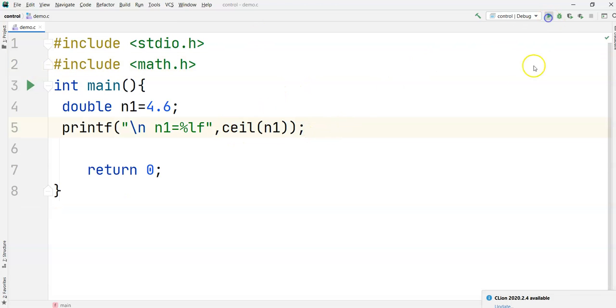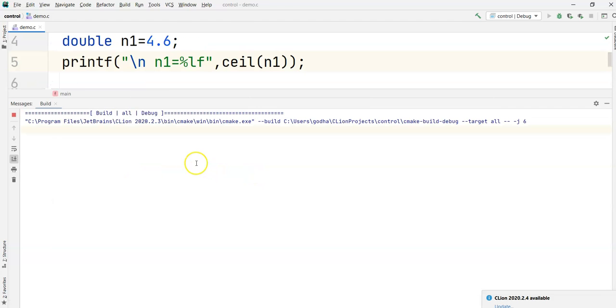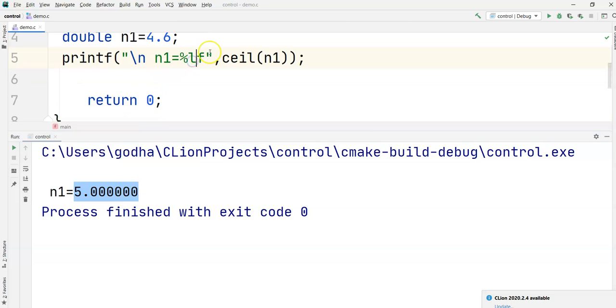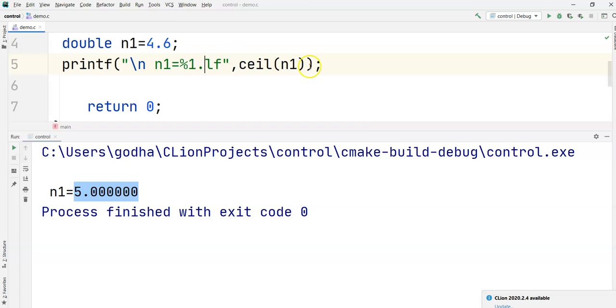Let's try to print this and see what output we are getting. So we should get the output 5.0. It's running. All right, so we got 5.00 and if I want one decimal value, I will just say .1lf.